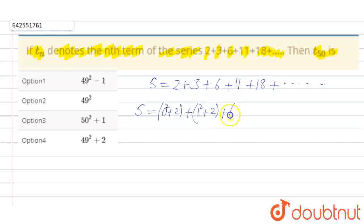the third term 6 can be written as 2 squared plus 2, and 11 can be written as 3 squared plus 2. Similarly, 18 can be written as 4 squared plus 2, and so on. So this series can be written in this pattern.